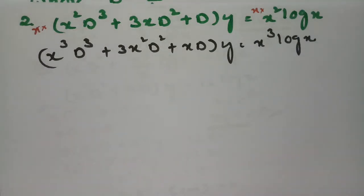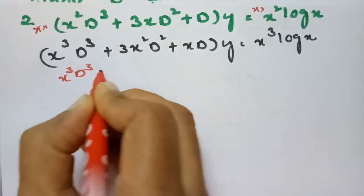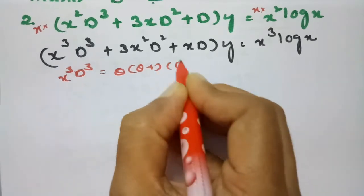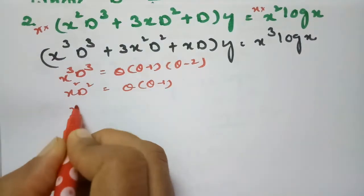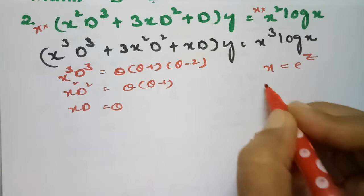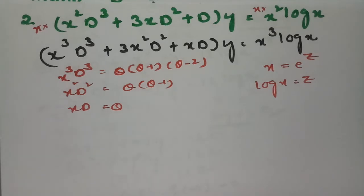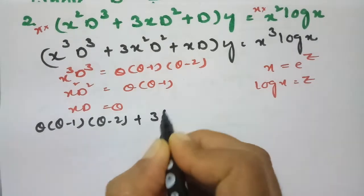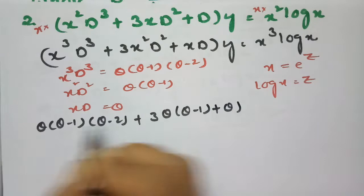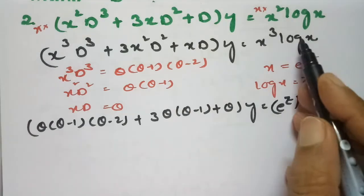Now this is a Cauchy's Euler equation. To transform into a linear equation with constant coefficients: x³D³ = θ(θ-1)(θ-2), x²D² = θ(θ-1), xD = θ, x = e^z, and log(x) = z. Substituting all these values gives θ(θ-1)(θ-2) + 3θ(θ-1) + θ of y equals e^(3z) * z.